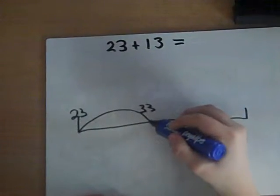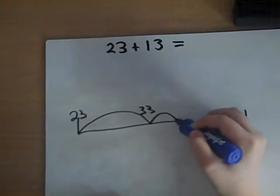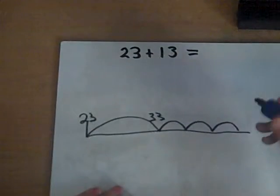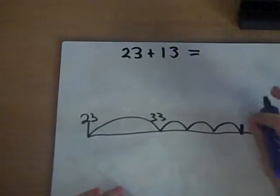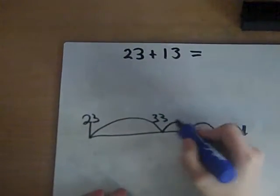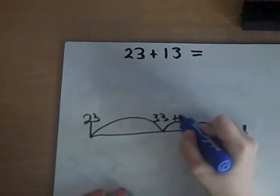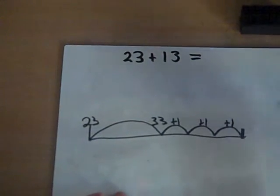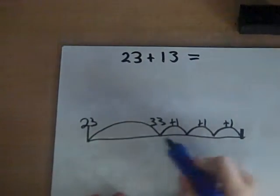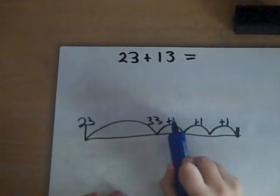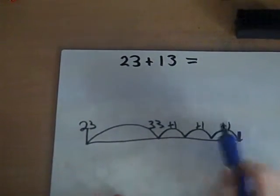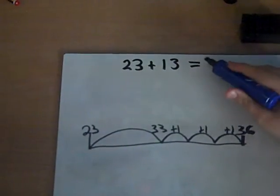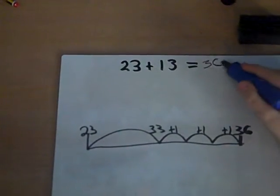I'm going to add 3 on — so 1, 2, 3. That's add 1, add 1, add 1. And then that gives you 33, 34, 35, 36. So yeah, so it's 36.